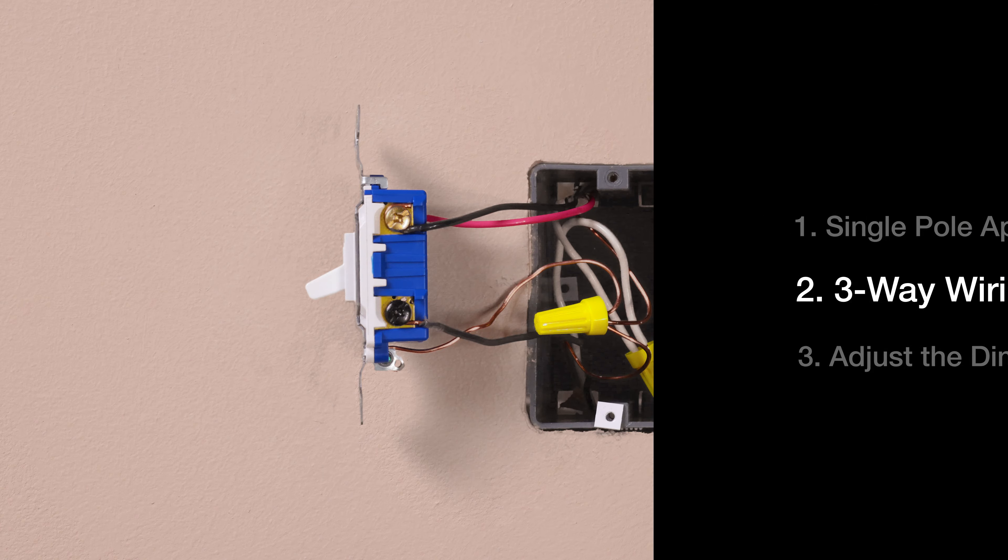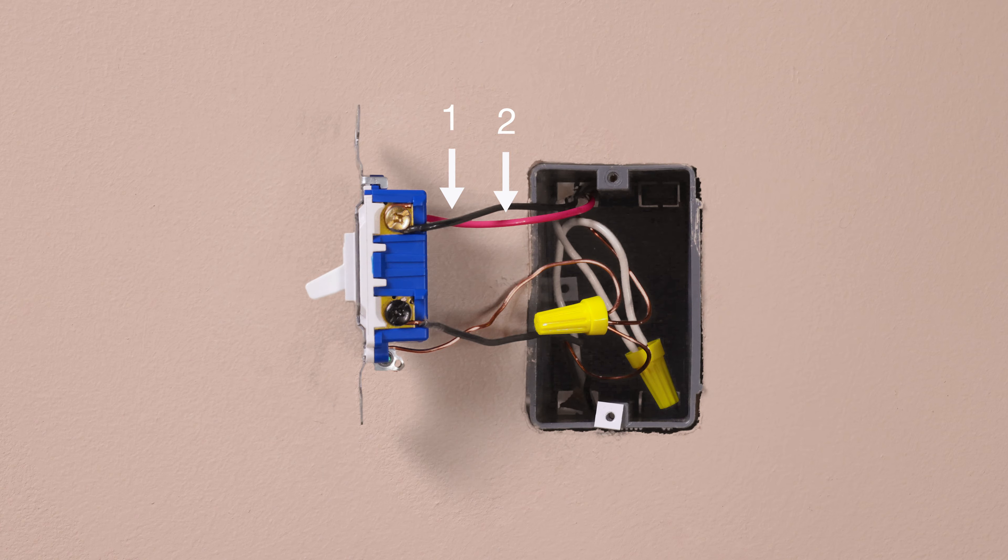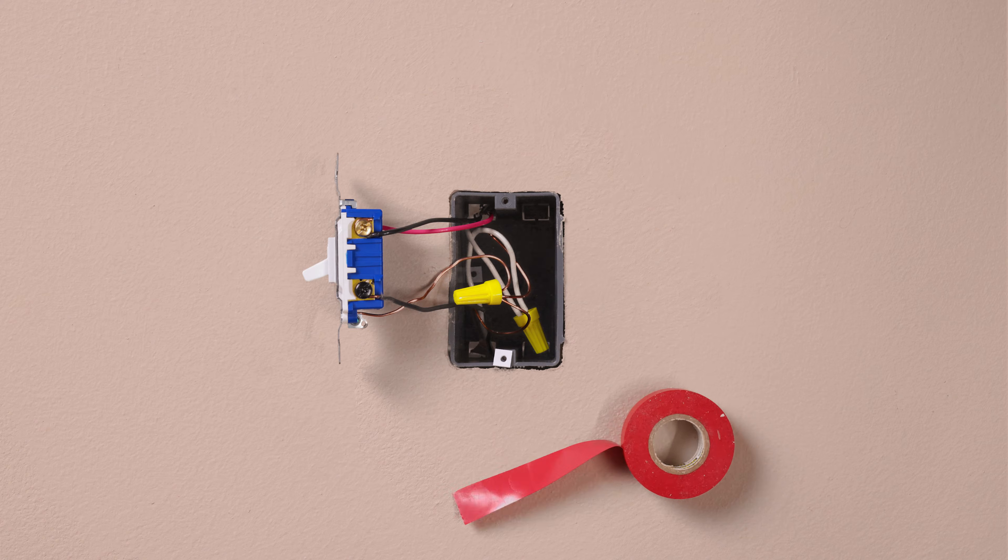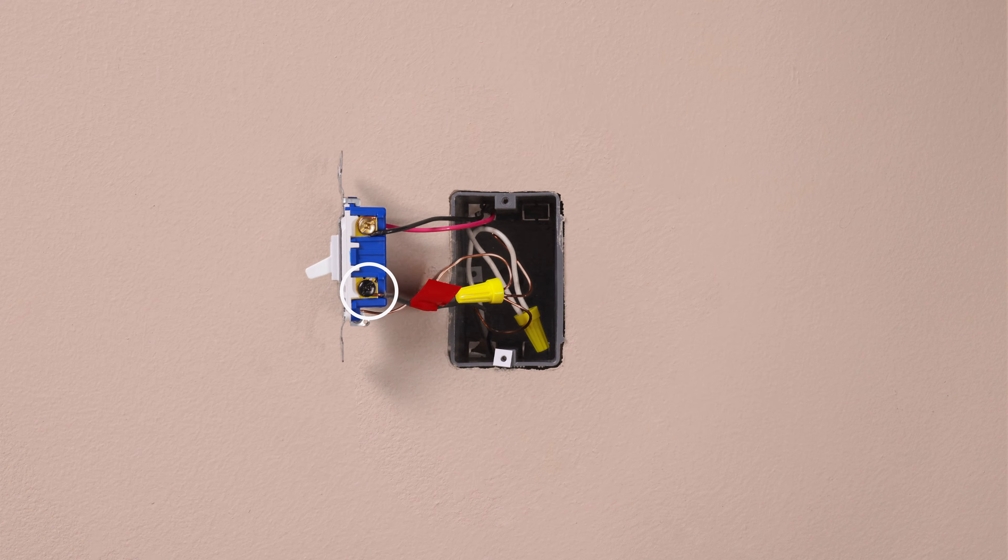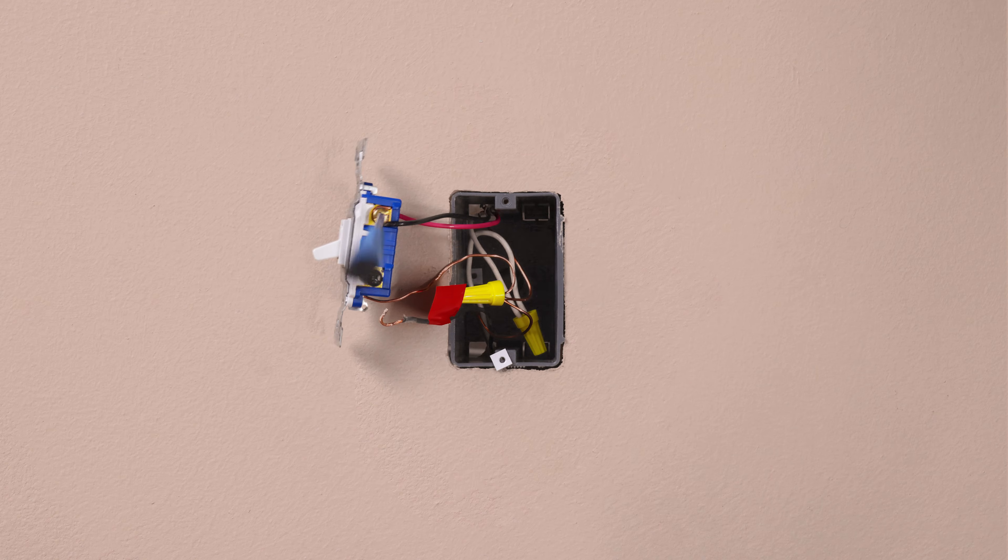To install this dimmer in a three-way, you should have three wires plus a ground connected to your old switch. Before removing your old switch, take a piece of electrical tape and tag the wire connected to the different colored screw of the existing switch. This is typically a black wire. Then disconnect and remove the switch.